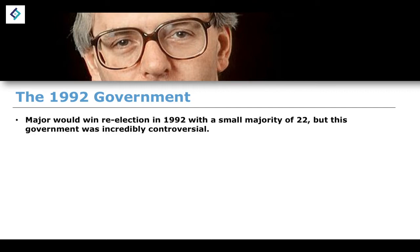We see that Major takes over from Thatcher and then wins re-election in 1992. But he only wins re-election with a very small majority — a majority of 22 MPs. This is something that is not particularly helpful, and not particularly unexpected.